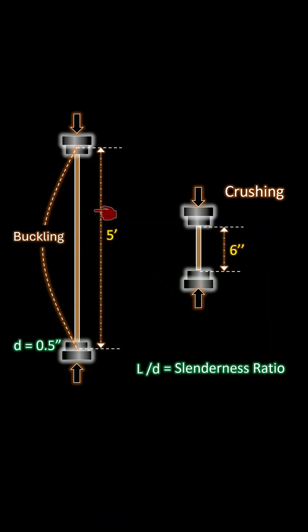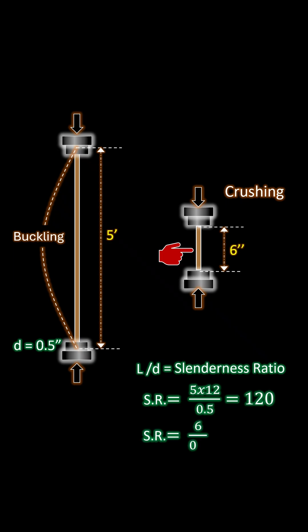If we take the long stick, the slenderness ratio is 5 feet times 12 inches per foot divided by half an inch, which is 120. For the short stick, the slenderness is 6 inches divided by half an inch, which is 12. This is 10 times less than the long stick.